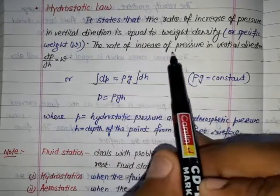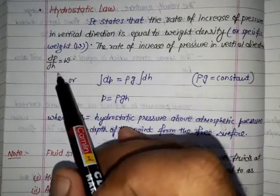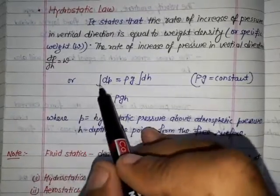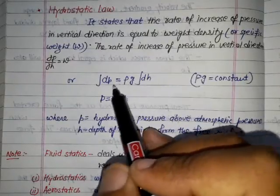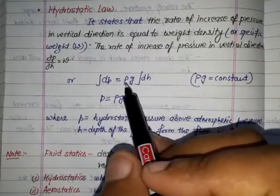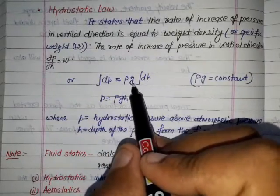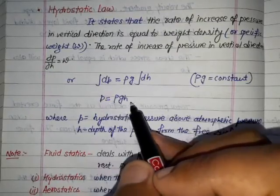The rate of increase of pressure in vertical direction, ∂P/∂H, equals w. Now we integrate: ∫dP = ρg ∫dH. Taking ρg out, it becomes ρg dH and dP. After integration we get P = ρgH.